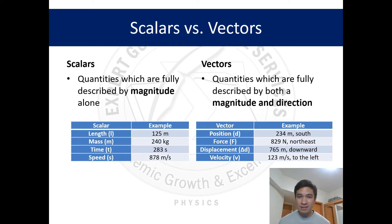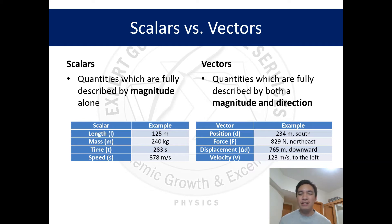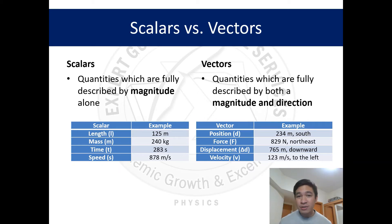The same goes for force: 829 newtons is your magnitude, plus northeast direction — put them together and you have a vector. Similarly, displacement of 765 meters downward and velocity of 123 meters per second to the left both have magnitudes and directions, therefore both are vectors. So to recap: scalars have magnitude only, while vectors have both magnitude and direction.